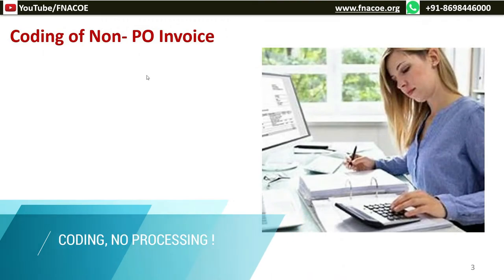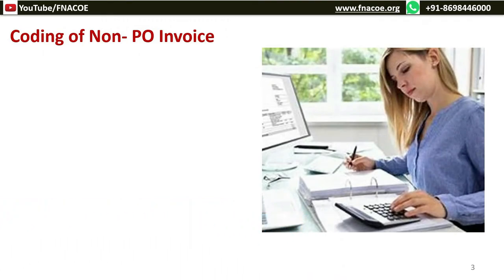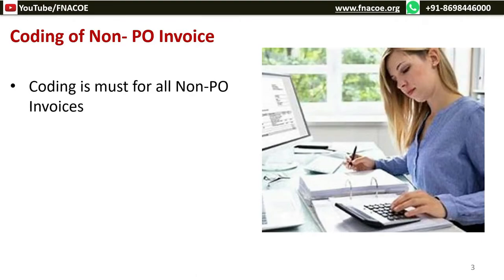Coding refers to the assignment of the general ledger and cost center to be charged for the amount of the invoice received. All non-PO invoices, bills, and statements need to be allocated to the right cost center for allocation purposes. In large organizations, this coding work is managed by account specialists who have authority to allocate account and cost center codes and send the invoices and bills to the approver, after which the invoice is finally routed to the accounts payable team to punch into the AP system.